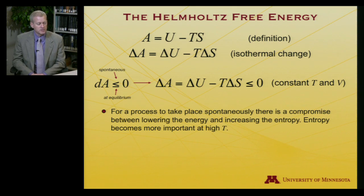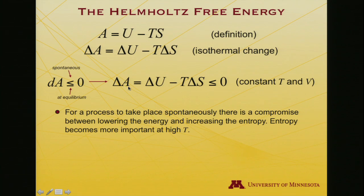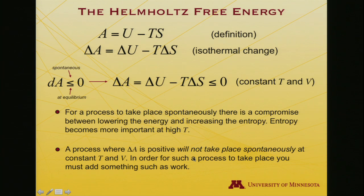For a spontaneous process there needs to be a compromise between an energy term and an entropy term. Increasing entropy — preceded by a negative sign — makes ΔA more negative. ΔU becoming more negative also makes ΔA more negative. The two can balance one another, and entropy becomes more important at high temperature because it is multiplied by T. A process where ΔA is positive will not occur spontaneously at constant T and V; you would need to add work to drive it.